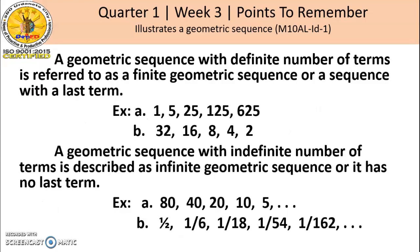A geometric sequence with a definite number of terms is referred to as a finite geometric sequence, or a sequence with a last term. Examples: Letter A, we have the sequence 1, 5, 25, 125, 625. Letter B, 32, 16, 8, 4, 2.